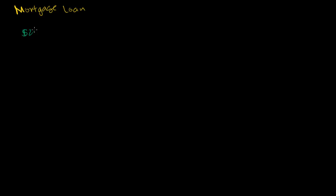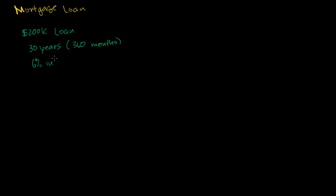We take out these loans to buy houses. Let's say you take out a $200,000 mortgage loan, secured by your house. You're going to pay it over 30 years — that's 360 months — because you normally pay monthly, and the interest normally compounds on a monthly basis. Let's say you're paying 6% interest annually, and since they compound monthly, that's 6% divided by 12, so 0.5% per month.